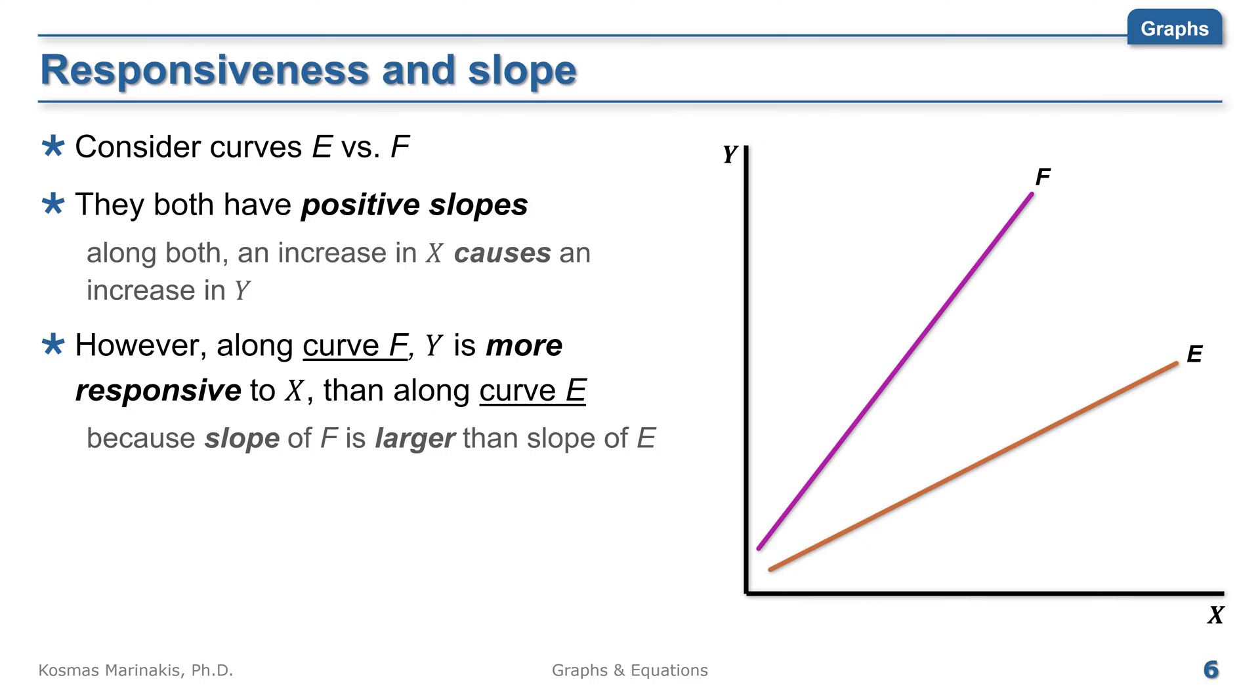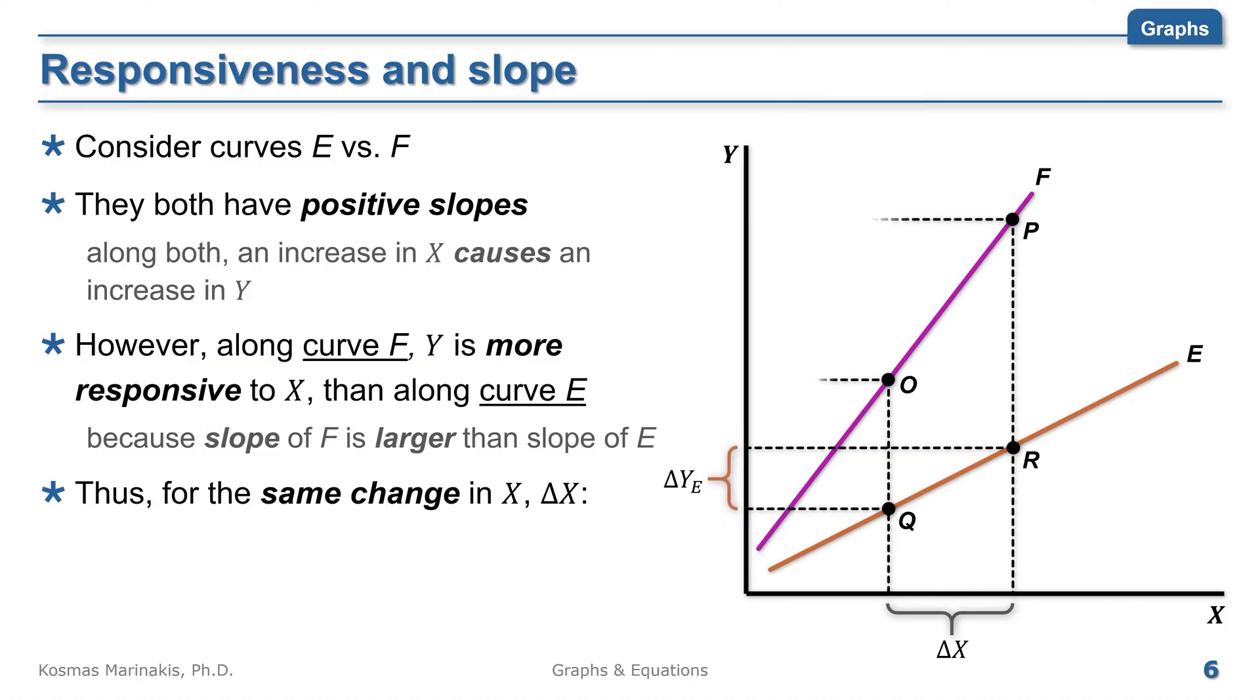Consider, for instance, a change in x equal to delta x. Then, look how y responds along E and how it responds along F. Clearly, the higher the slope of the line, the more the responsiveness between the two variables.